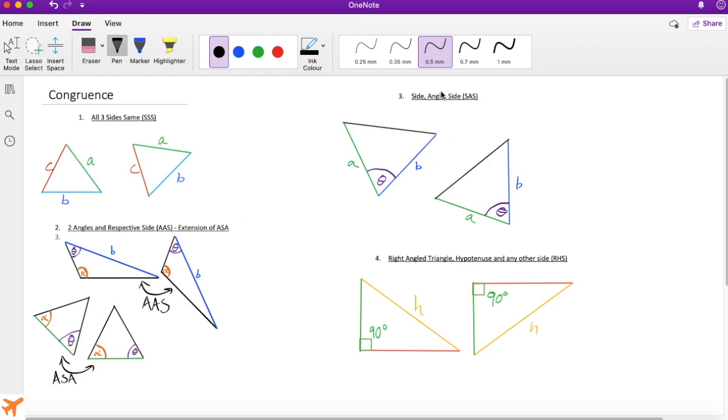The third rule: side-angle-side. If this side, this angle, and this side matches up with a triangle where we have this side of the same length followed by this angle and then this side, if they're all the same then these two triangles are congruent.